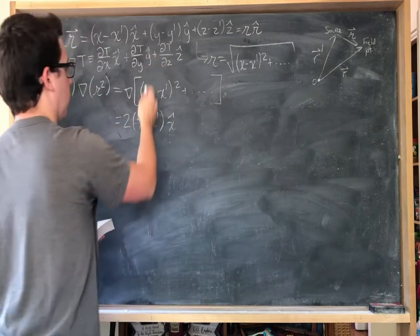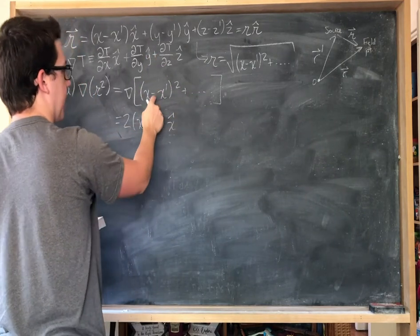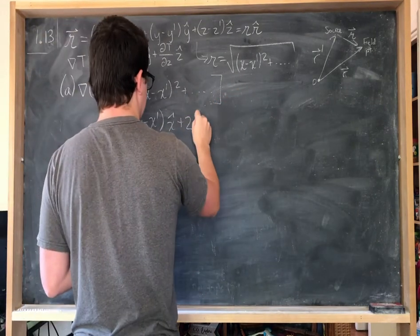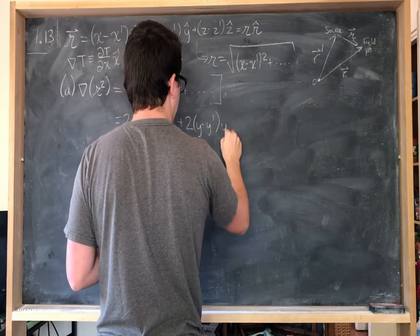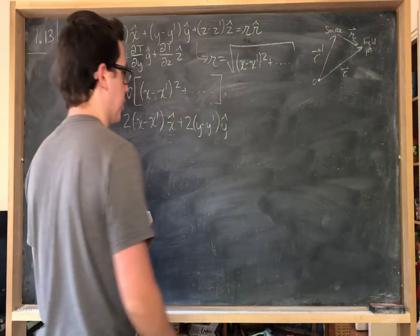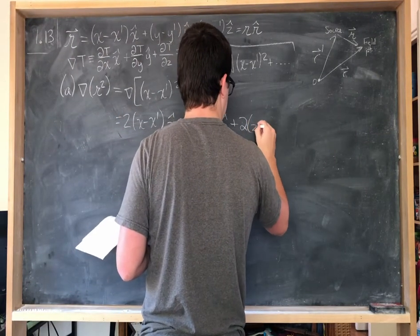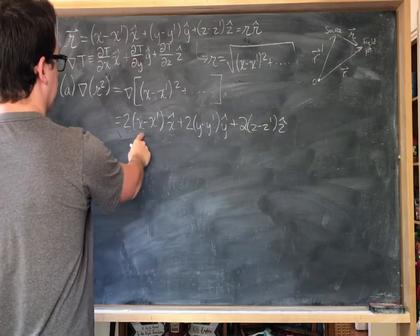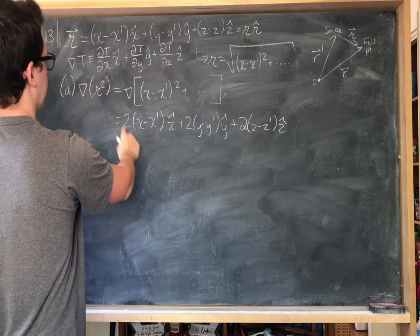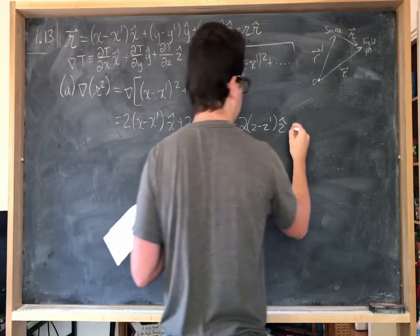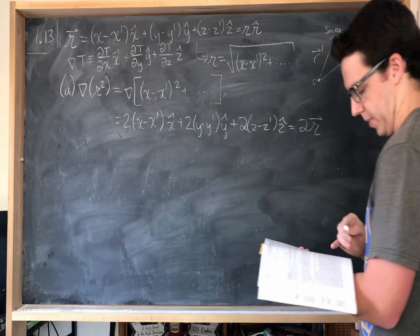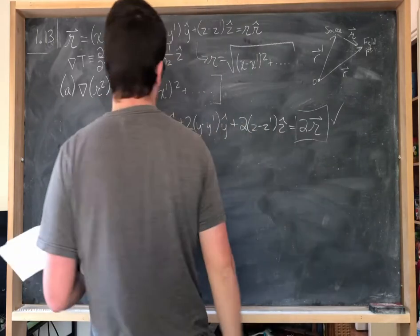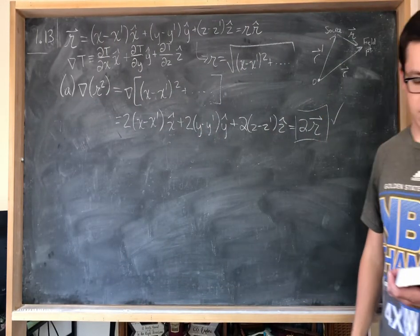Likewise for the y-hat component, we derive with respect to y — ignoring the x and z terms — and we get the same form with y instead of x, in the y-hat direction. And again for z. This should look familiar because it is just two times our original separation vector. So we have shown that the gradient of script r squared equals two times the vector r.